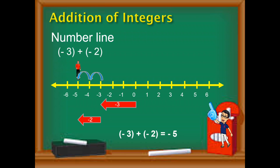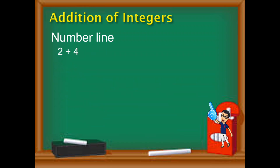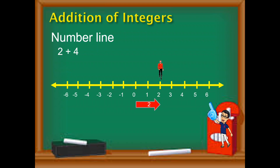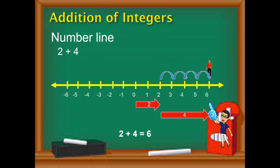How about if both integers are positive? Like 2 plus 4 — again, we are adding like sign. Start with 0. The first integer is 2, which is positive, so move to the right — 1, 2 units — representing positive 2. From 0, you are now at 2. The next integer is 4, so from 2, move to the right again — 1, 2, 3, 4 — representing positive 4. Your last position is 6, so 2 plus 4 is equal to 6.